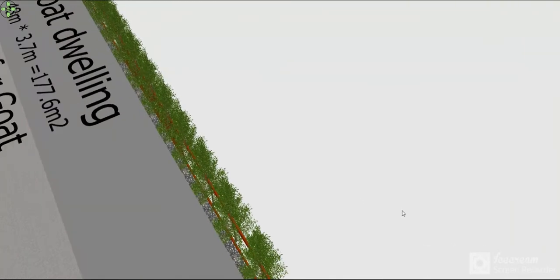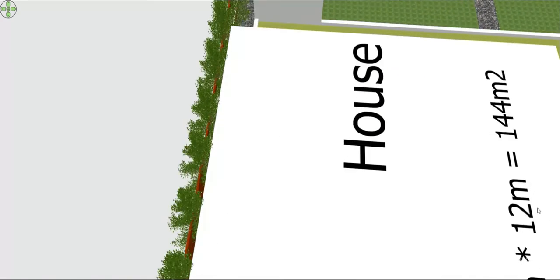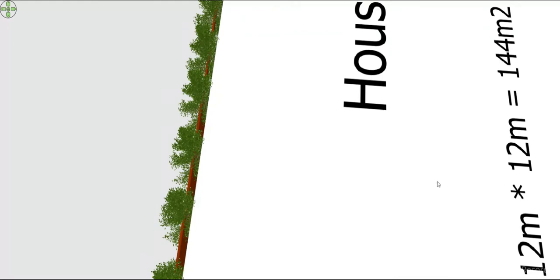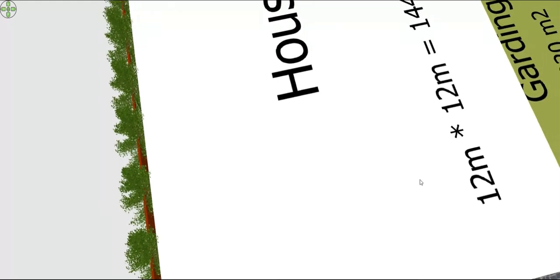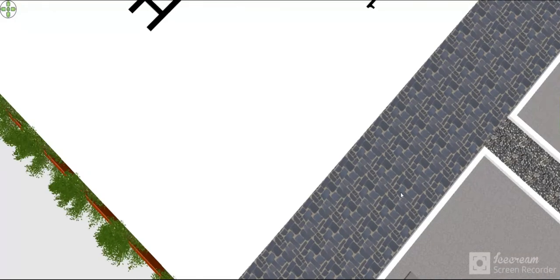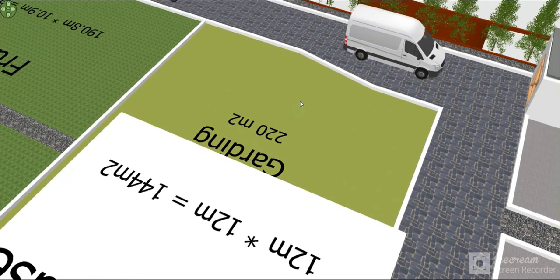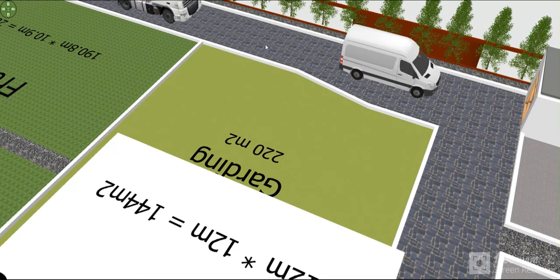Here is the house — it is about 144 square meters, which is 12 meters by 12 meters. There is also a garden of about 220 square meters. The internal street is about 4 meters wide, and this street here is also 4 meters, but this one is 5 meters because the driver needs space to turn around.